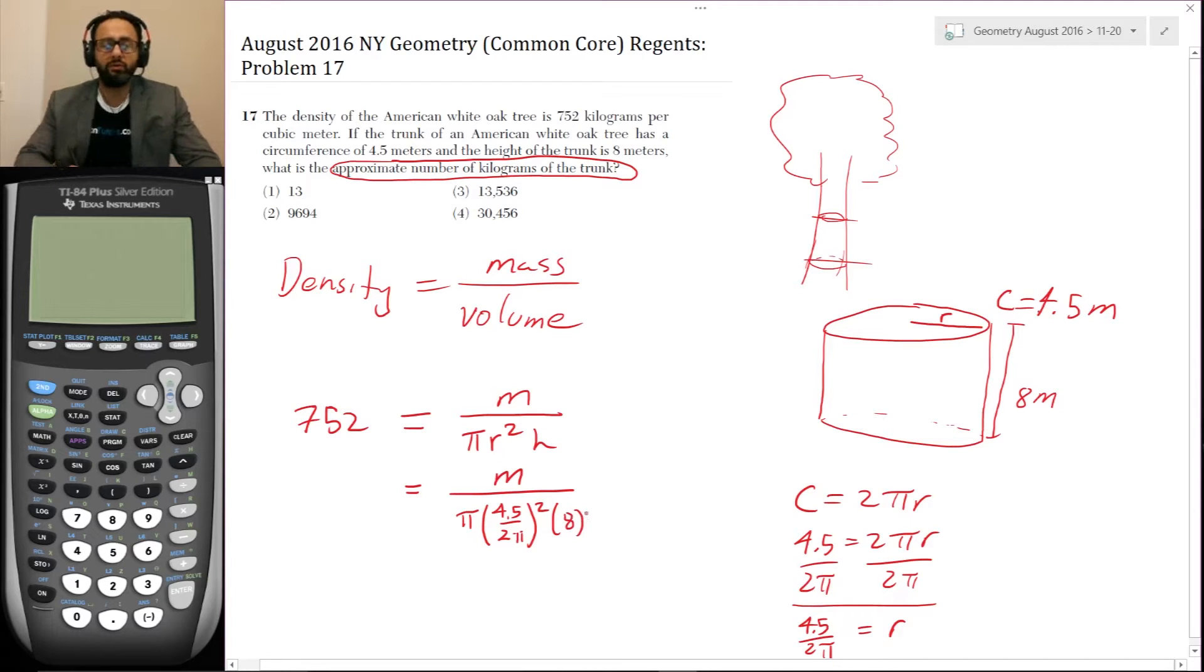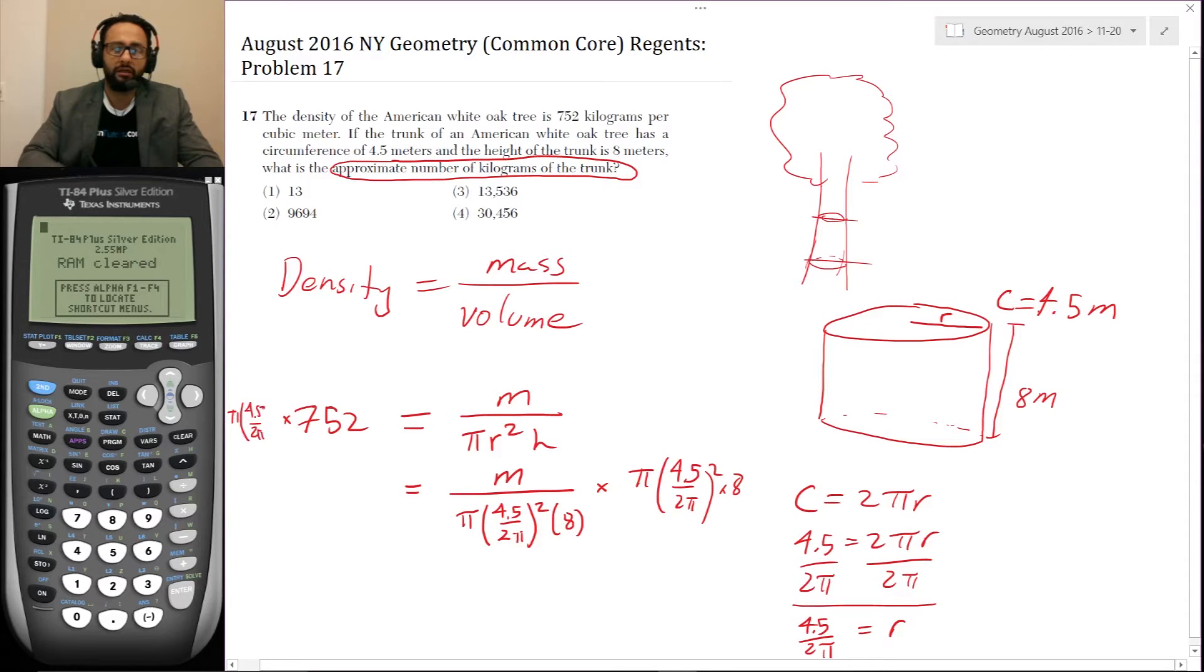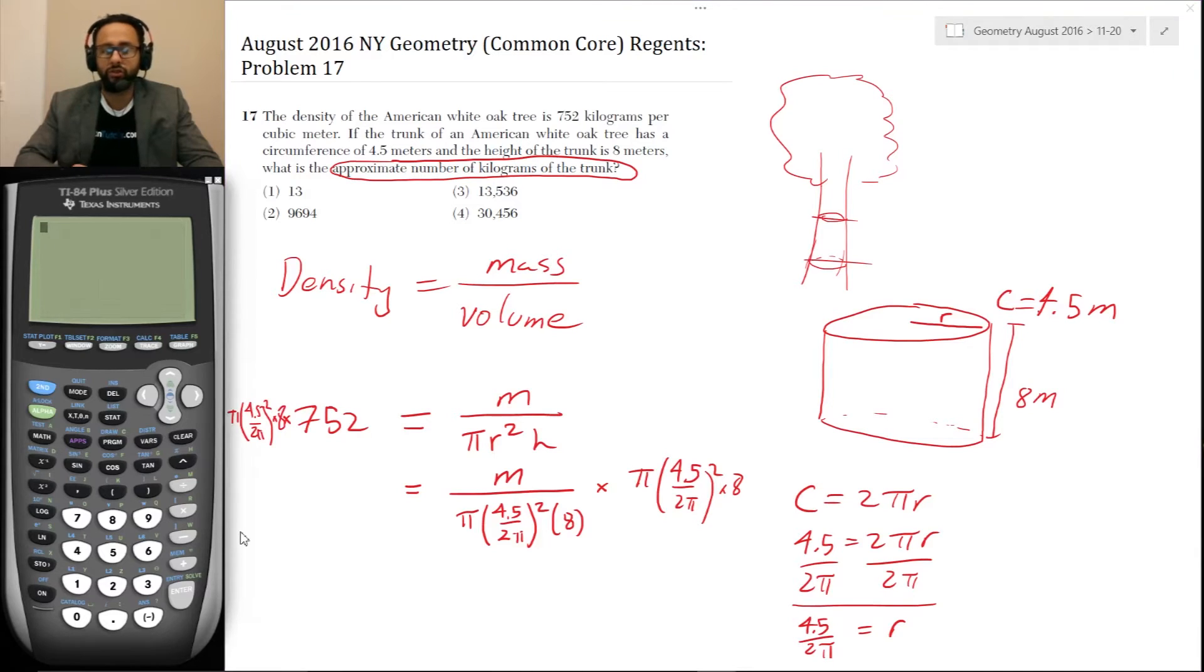Now you have options. I know a lot of physics people like to multiply both sides by this quantity first and then plug into the calculator. So in other words, multiply by pi times 4.5 over 2 pi squared times 8. And do the same thing here times pi 4.5 over 2 pi squared times 8. Let's do that. I tend to think that that's the easier way to go.